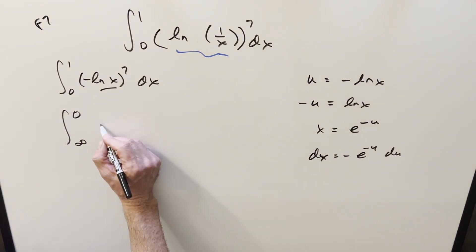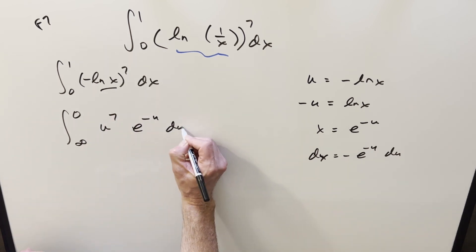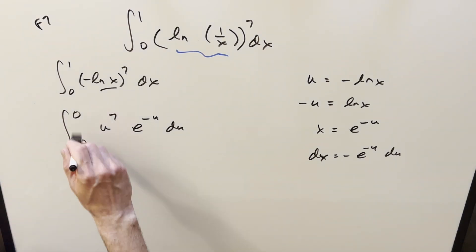This part right here becomes u to the 7th. dx is going to be minus e to the minus u du. Take the minus sign out front. But let's use it to swap our bounds. So I'll get rid of that and just flip this so we've got the larger number up top.